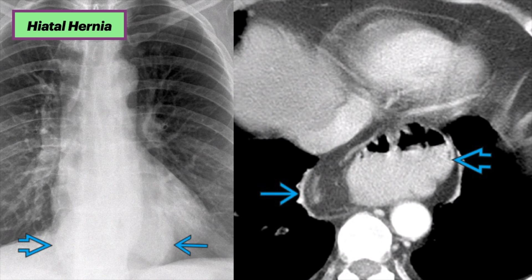The next case is a hiatal hernia. The chest X-ray on the right shows a large hiatal hernia with abnormal convexity and lateral displacement of the lower third of the azagoesophageal recess. There is also a left retrocardiac opacity. Gas within this lesion is consistent with a hiatal hernia. The corresponding axial CT confirms the presence of a peri-esophageal hiatal hernia, which contains a portion of the stomach. Note the lateral displacement of the inferior aspect of the azagoesophageal recess.